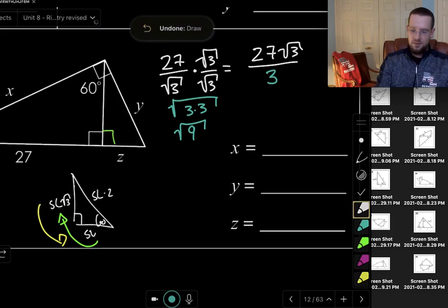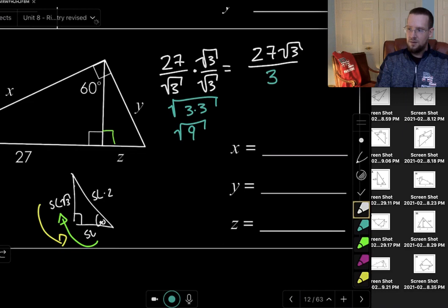And if you remember how multiplication works with these radicals, the multiplication happens under the square root sign. And so this is actually the square root of nine, which is just three. And so 27 divided by three is nine, right? Nine root three.